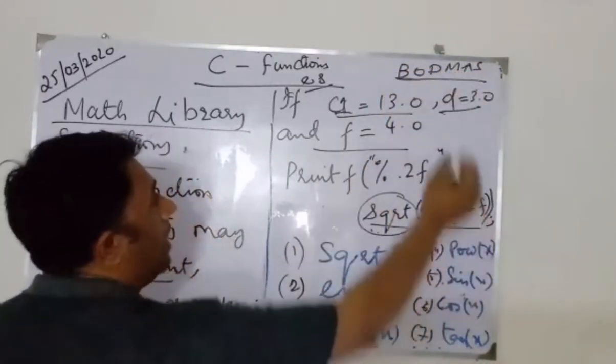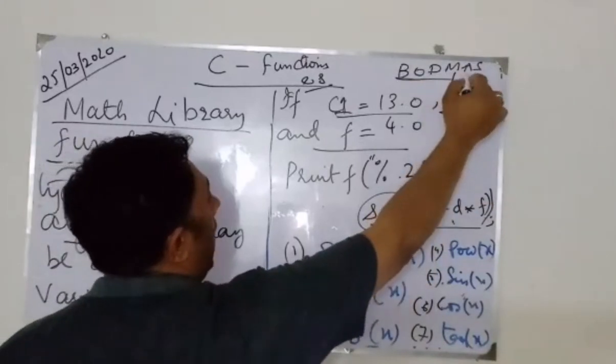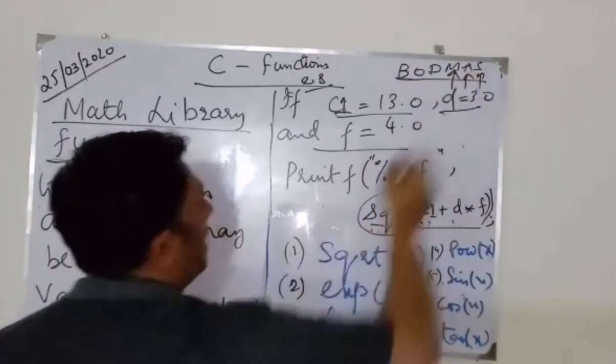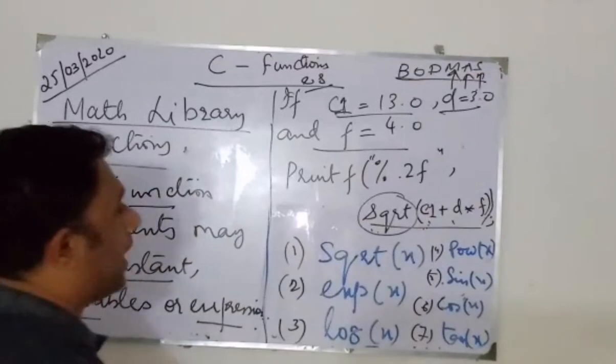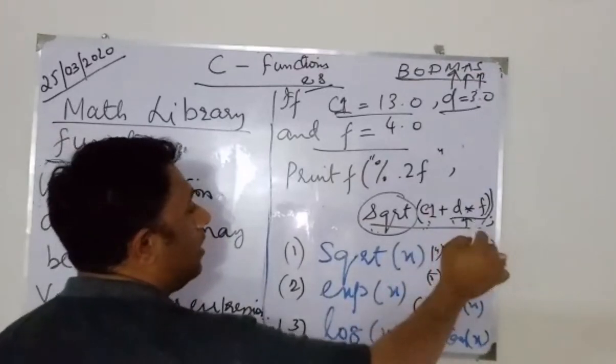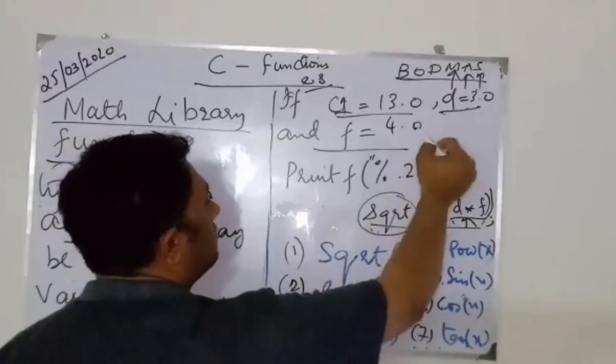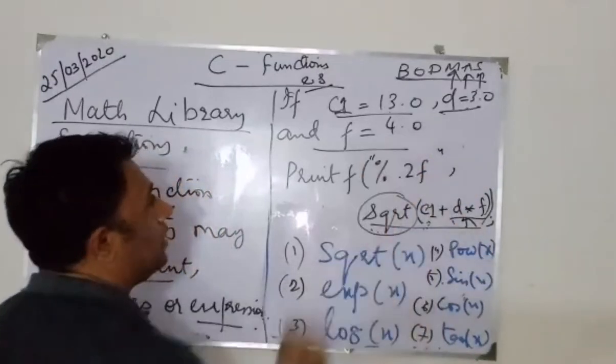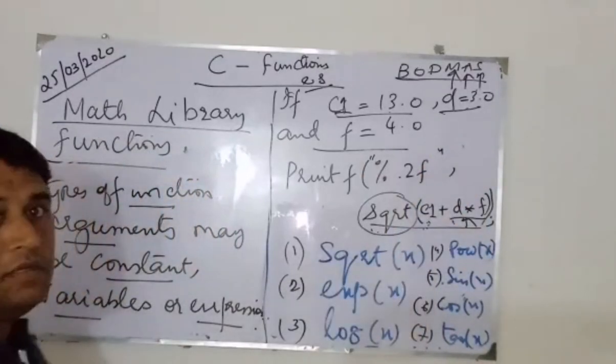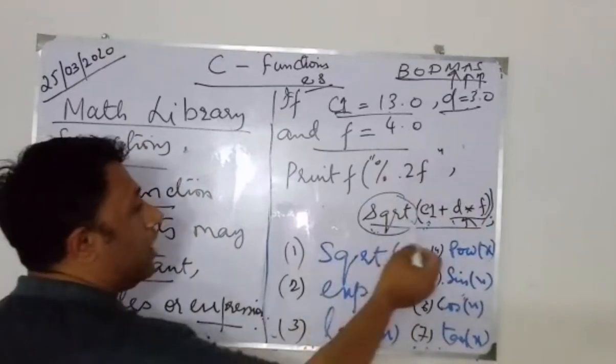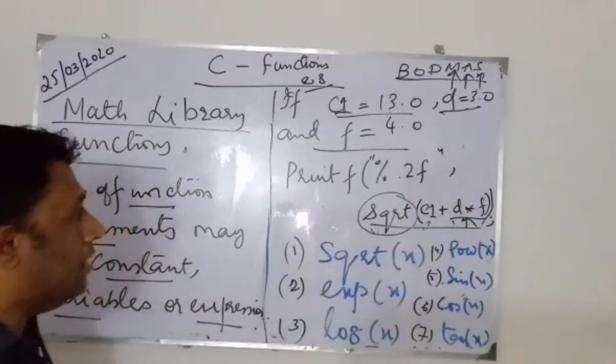Addition, subtraction. I have BODMAS used. I have B is going to multiply with my F, so that becomes 12. Add with my 13, which becomes 25. So I get square root of 25 is going to be what? Whatever the answer comes.